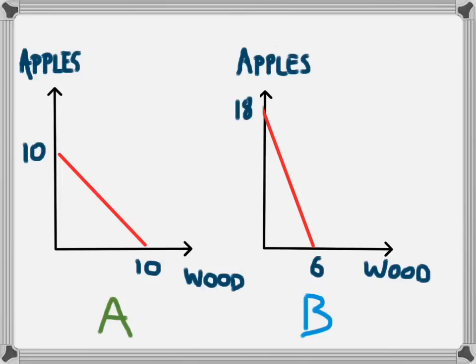To start with we're going to look at two economies, and in each economy there are two products which are produced. In an economy which could only produce two products you'd want those to be necessities, so we're going to look at food and shelter in the forms of apples and wood. What we are seeing here are the production possibility frontiers for both of those countries. Each one is showing the maximum amount of each product which could be made by the economy at any particular point in time, and it also shows the combinations of products which could be made.